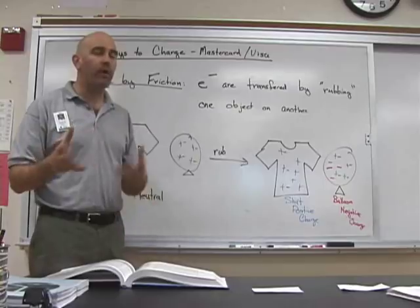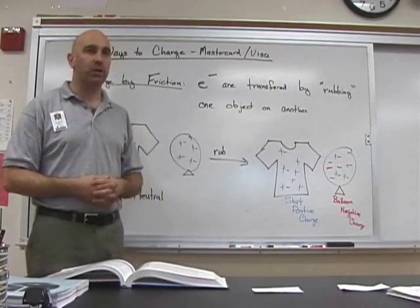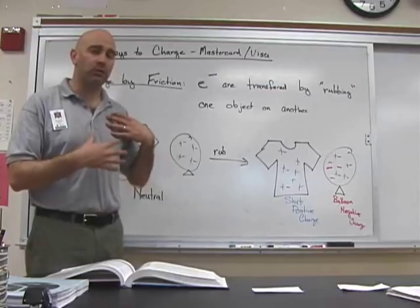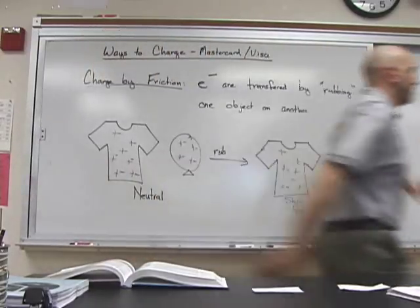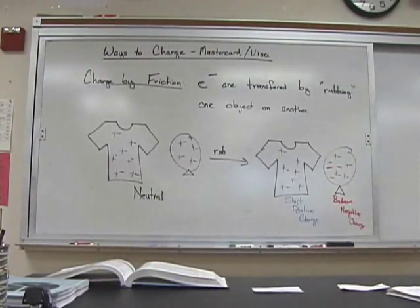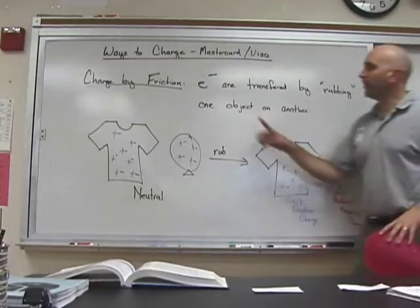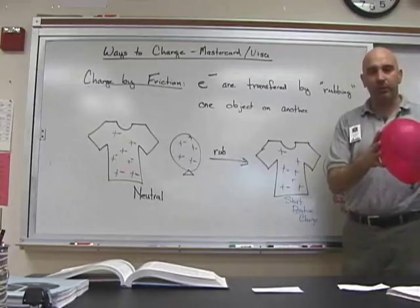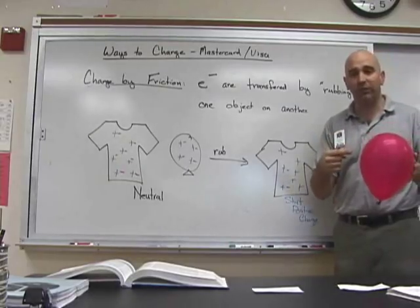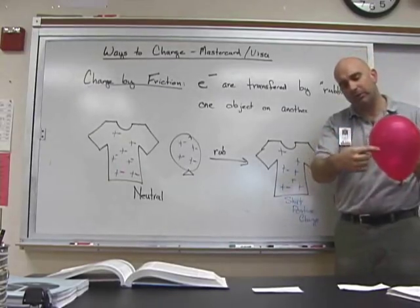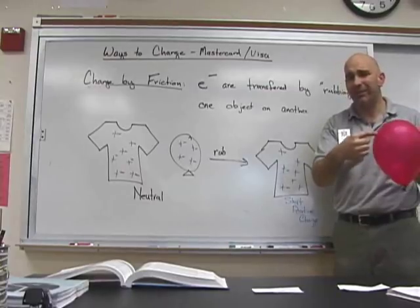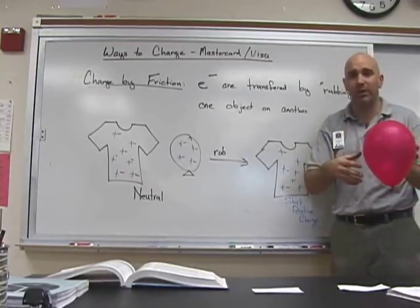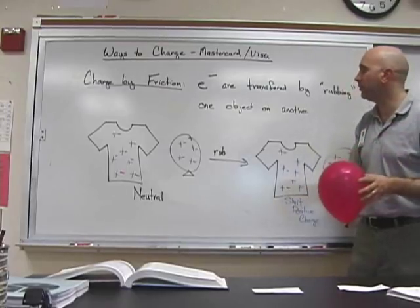In our demo, one very common way of charging an object is to physically rub a balloon against your shirt, for example. When you're doing this, basically electrons are being transferred from my shirt to the balloon. Since the balloon is an insulator, the electrical charge has to stay right around here. It cannot flow around the balloon because insulators don't allow electrons to flow around too much.